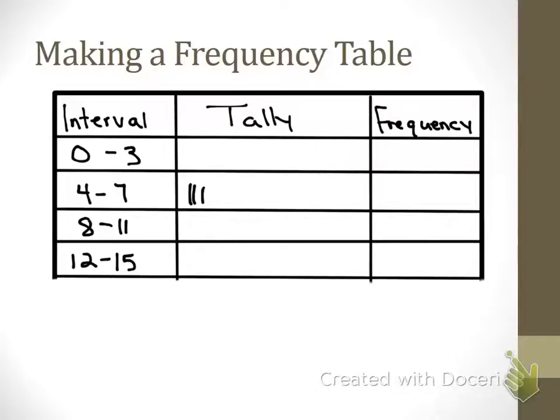What's the next one? 10. So which interval would 10 go in? 8 to 11. What about the next one? 5. 4 to 7. And then 7. 4 to 7 again. Then 2. So where does 2 go? 0 to 3. So I want you to pick up on this next number, the 6, and I want you to go ahead and finish the tallies for the rest of this data chart. We'll check them in a second.